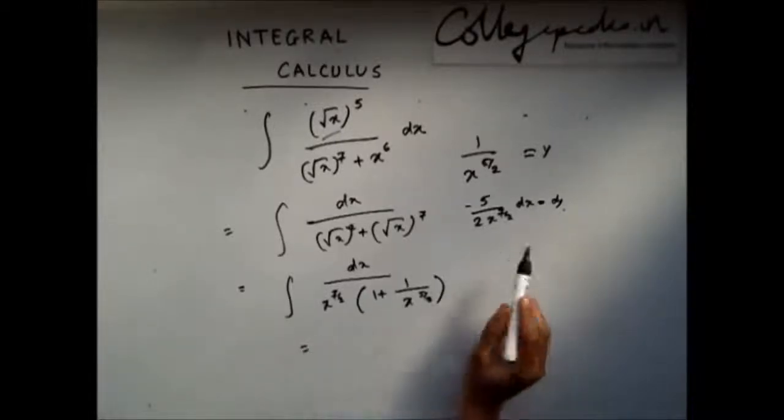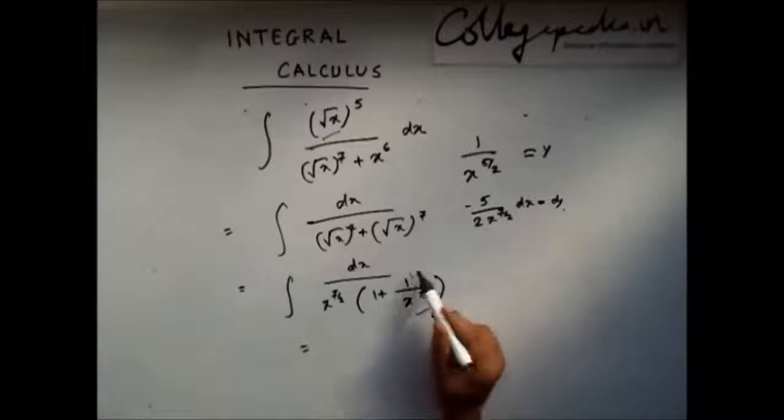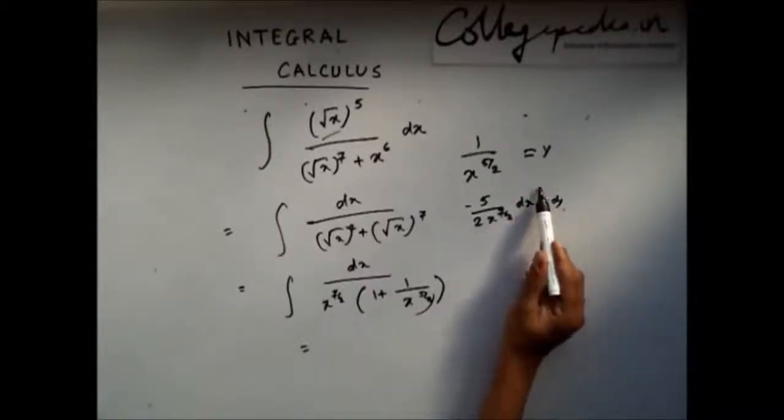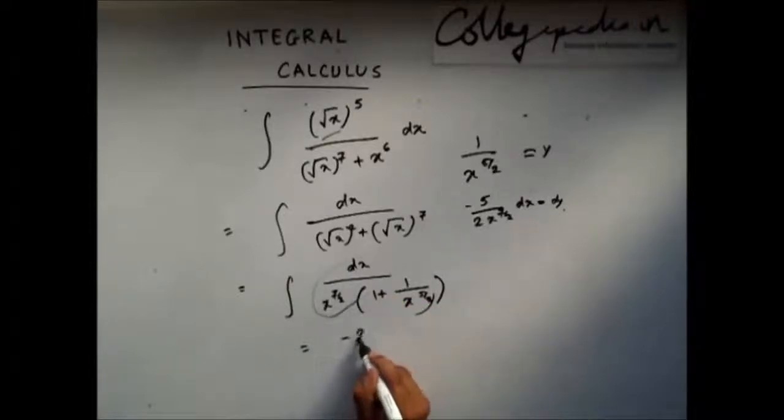Replace this. Replace 1 by x to the power 5 by 2 with y, dx by x to the power 7 by 2 with minus 2 by 5 dy.